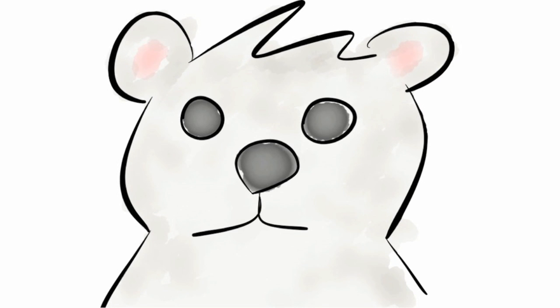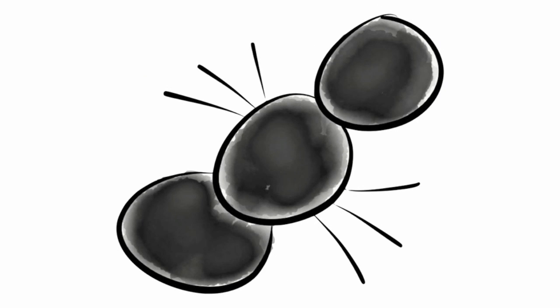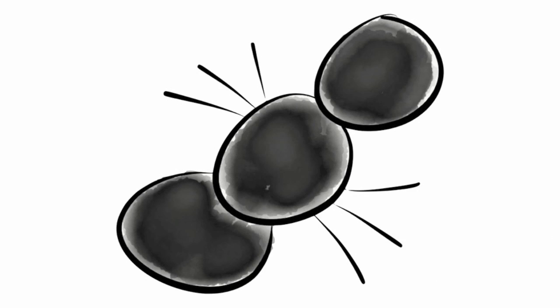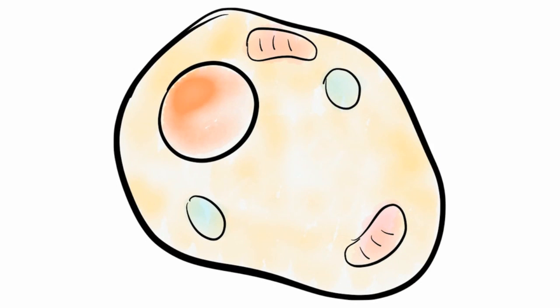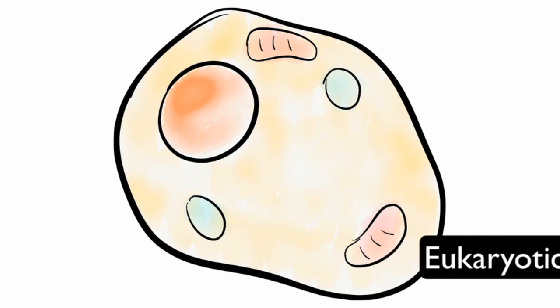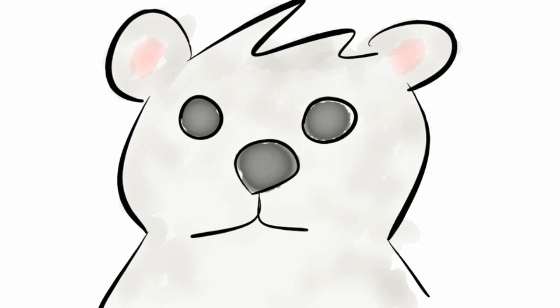Organisms in the animal kingdom include bears, fish, insects, and other multicellular organisms. All animals are made of animal cells that have a nucleus. Cells with a nucleus are called eukaryotic. Lastly, all animals are heterotrophs because they eat food for energy.